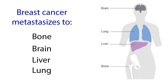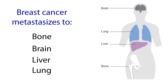Breast cancer metastasizes to bone, brain, liver, and lung. Colon, ovary, pancreas, rectal, and stomach cancers metastasize to liver, lung, and peritoneum. Bladder cancer goes to bone, liver, and lung. Kidney cancer can move to the adrenal gland, bone, brain, liver, or the other lung.